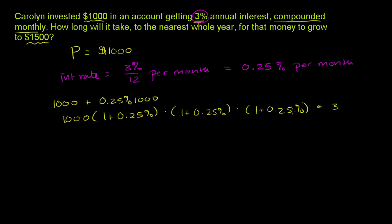After n months, she would have her original principal, $1,000 times 1 plus 0.25% to the n. This is how much she would have after n months.